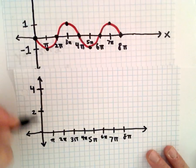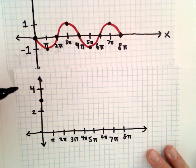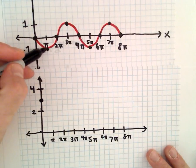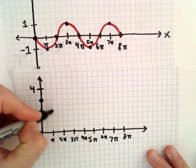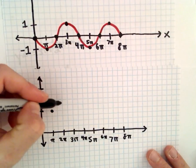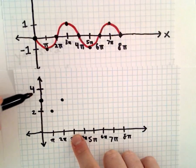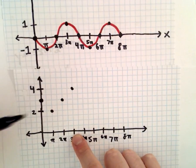So instead of starting at zero, our new graph is going to start at positive three. And instead of going down to negative one, it'll simply go down to two. And then it'll be back at positive three. And then at three π, it'll be up at positive four.